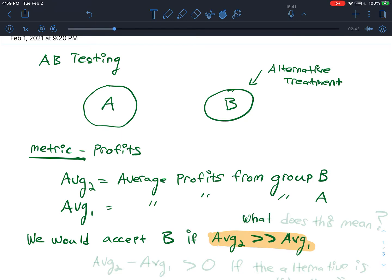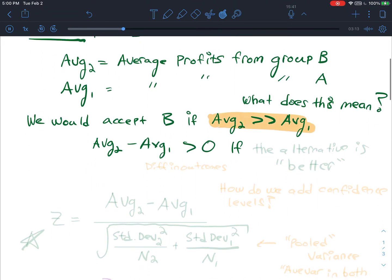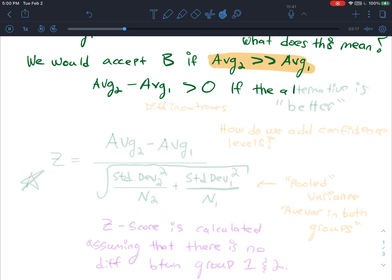So the first thing you might ask is, what does this mean? We can talk about the average of group B being greater than the average of group A. Another way to write that is average 2 minus average 1. If the average of 2 is much larger than the average of 1, we would expect this to be greater than 0 if the alternative is better.